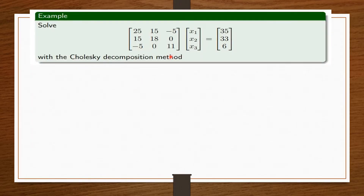We'll solve the matrix equation Ax = b with the Cholesky decomposition method. From the question we can deduce A, x, and b. The Cholesky decomposition deals with symmetric matrices.